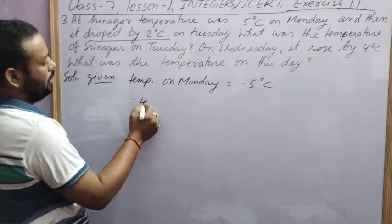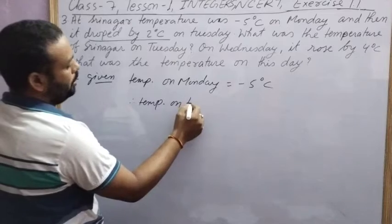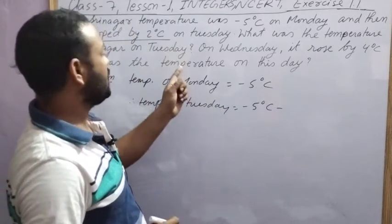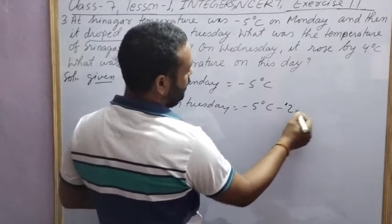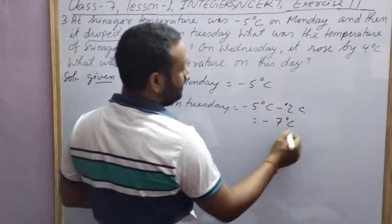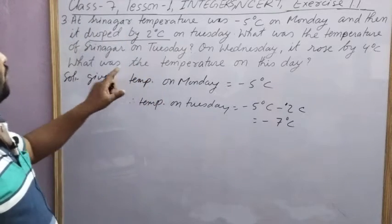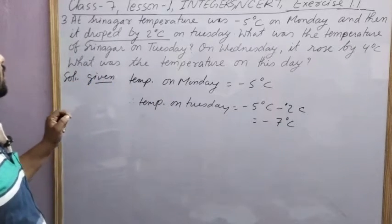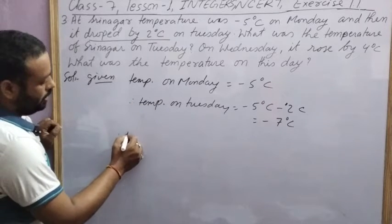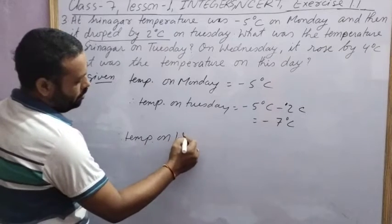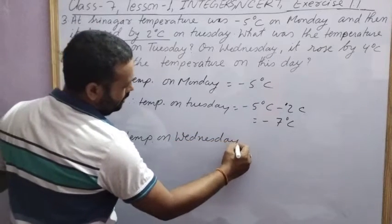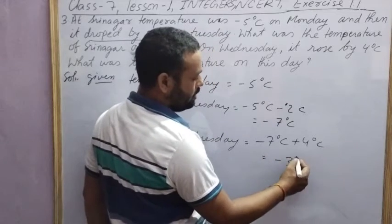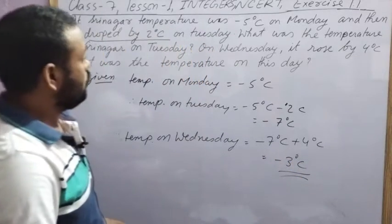On Tuesday, temperature dropped by 2 degrees Celsius. Therefore, temperature on Tuesday is: if it is dropping, that means you have to subtract. So minus 5 minus 2 equals minus 7 degrees Celsius. On Wednesday, it rose by 4 degrees Celsius. The temperature is increasing by 4 degrees. Therefore, temperature on Wednesday equals temperature on Tuesday plus 4 degrees Celsius, which is minus 7 plus 4 equals minus 3 degrees Celsius.